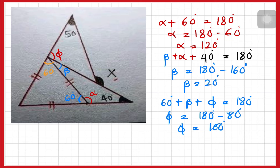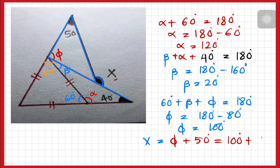We can see this figure. X equals delta plus 50 degrees. Delta equals 100 degrees plus 50 degrees, so x equals 150 degrees.